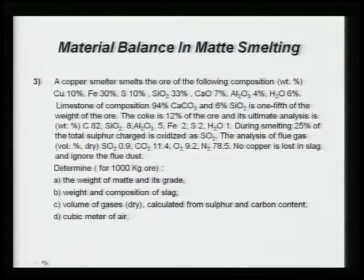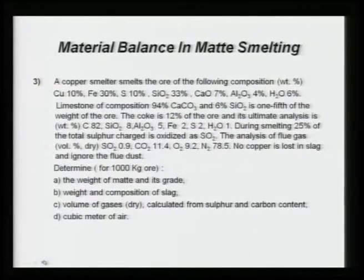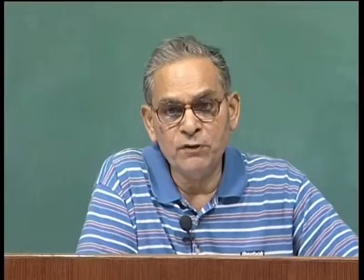Problem 3: a copper smelter smelts ore of the following composition — copper, iron, sulphur, SiO₂, calcium oxide, Al₂O₃, H₂O — all compositions are given. Limestone of composition 94 percent calcium carbonate and 6 percent SiO₂ is used and is one-fifth of the weight of the ore. Flux here is limestone, which is commonly used in most metal extraction industries.